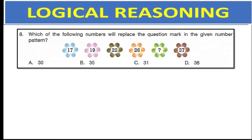Which of the following patterns will replace the question mark in the given number pattern? This is a relational pattern. If we jump from 17 to 19, it is 2 points. From 19 to 22, it is 3 points. From 22 to 26, it is 4 points. So from 26 to the next, it should be 5 points, giving 31. And from 31 to the next, which is 37, the difference is 6 points — correct. The answer is option C.